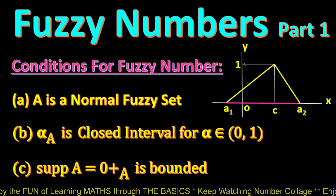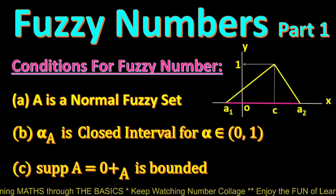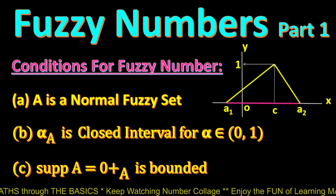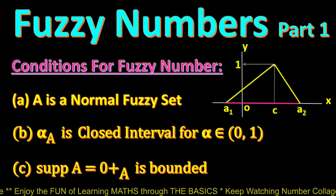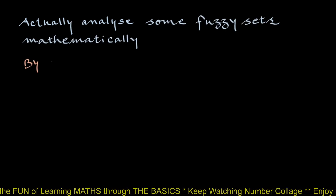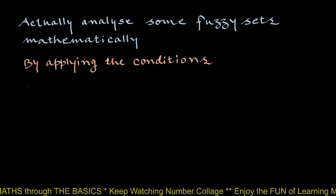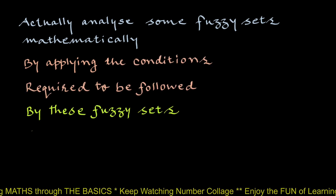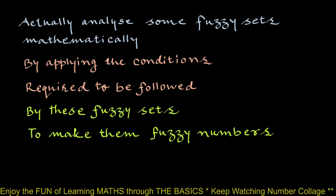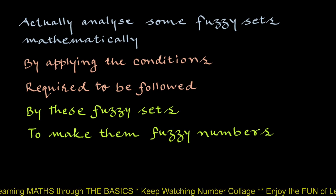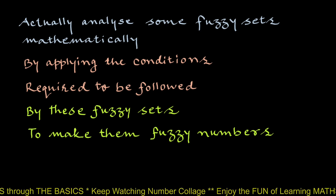In this series of videos on Fuzzy Numbers, in my last video, Fuzzy Numbers Part 1, we have seen how just by looking at the graph of a fuzzy set and applying these conditions, we can confirm whether a given fuzzy set is a fuzzy number or not. In this video, we are going to actually analyze some fuzzy sets mathematically by applying the conditions required for them to be Fuzzy Numbers.